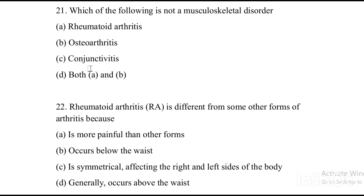Next question: Which of the following is NOT a musculoskeletal disorder? Option A: rheumatoid arthritis. Option B: osteoarthritis. Option C: conjunctivitis. Option D: both A and B. The answer is Option C, conjunctivitis. Musculoskeletal disorders include both rheumatoid arthritis and osteoarthritis.